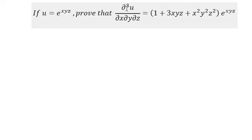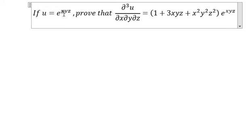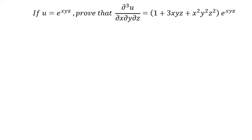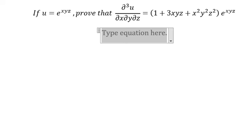We need to do the first derivative of the function u with respect to x. That means x will be the variable, and y and z are just like numbers. So we do the first derivative of u with respect to x.